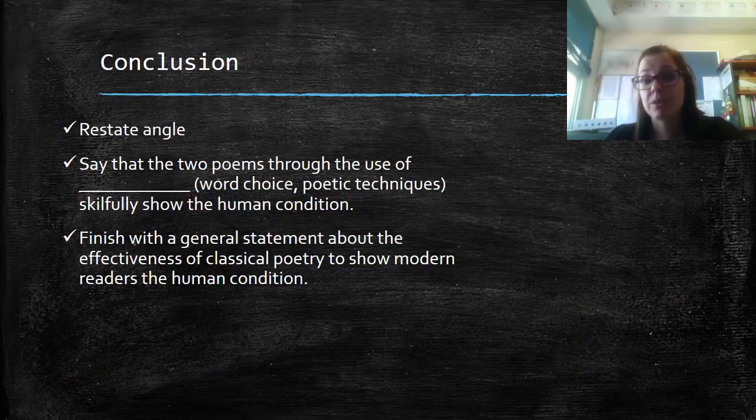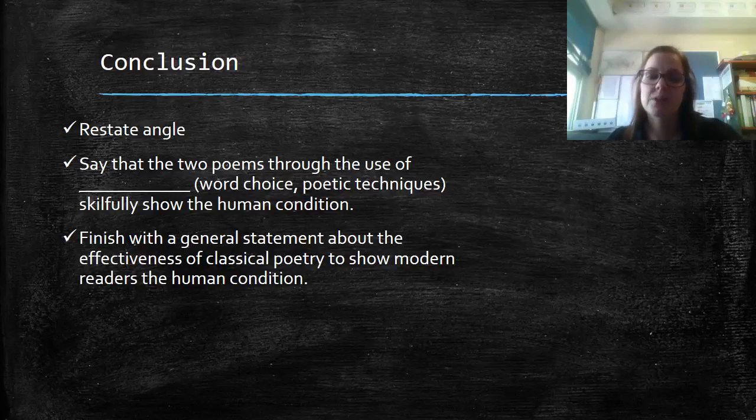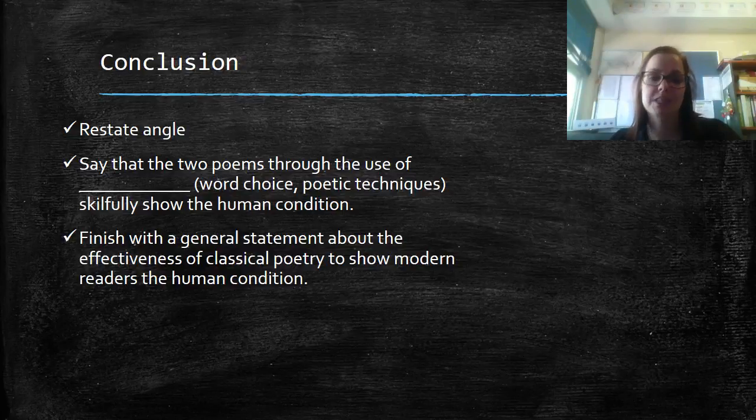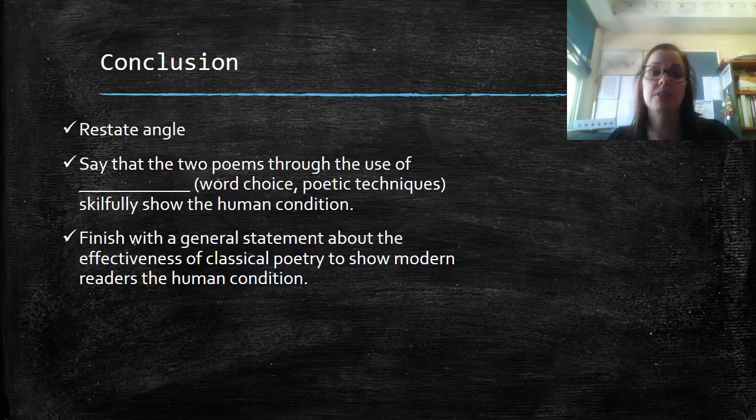You need to finish off with a conclusion, restate your angle, say that the two poems through the use of whatever you chose skillfully show the human condition, and then you need to finish with a general statement about the effectiveness of classical poetry to show modern readers the human condition.